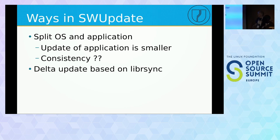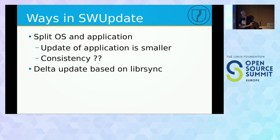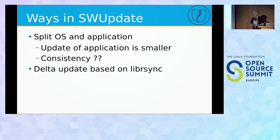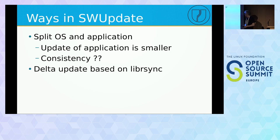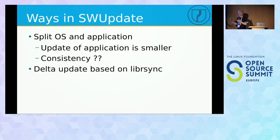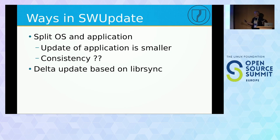Different approaches we have had in the past: for example, we can split between OS and application. If we provide a separate update package just for the application, we have some sort of incremental update, because the application is updated much more frequently than the OS. The big issue is consistency — as a release manager you have to check that the new application is still compatible with the libraries provided by the OS. In SW Update there are some hooks for consistency, but this is project-specific.